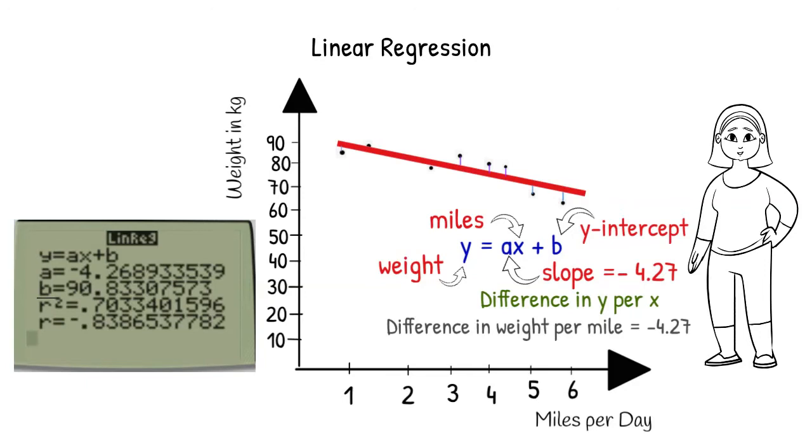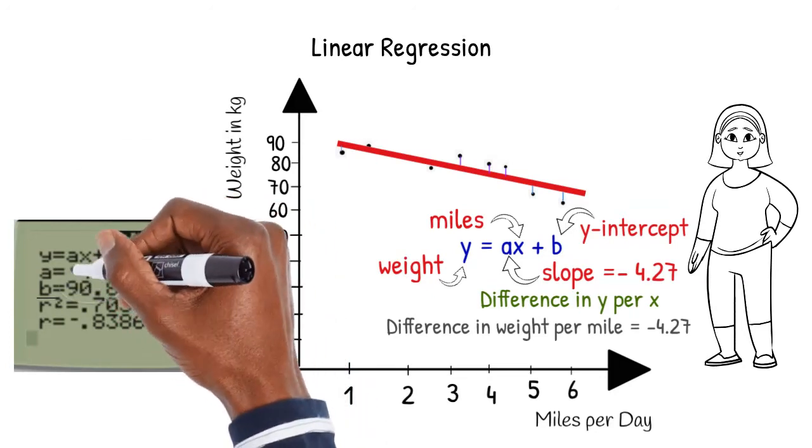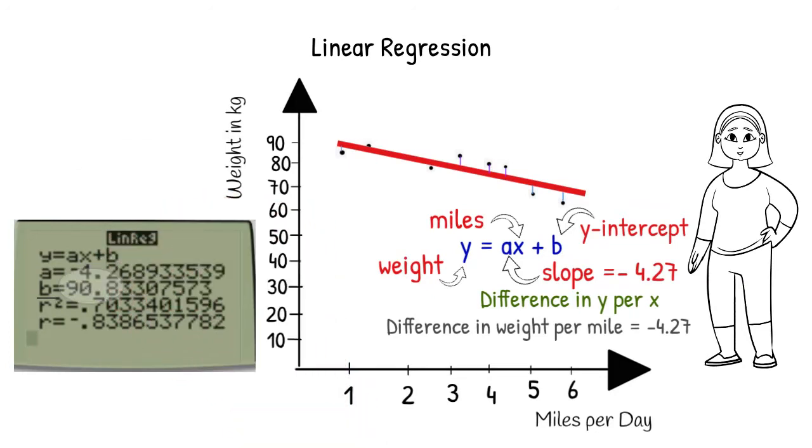According to our model, a woman who walks no miles weighs 90.8 kilograms. However, since all of the women in our study walk between 1 and 6 miles, it is not reliable to make a prediction outside of this range.